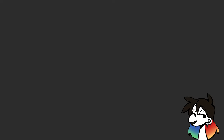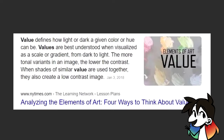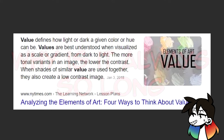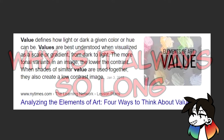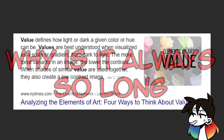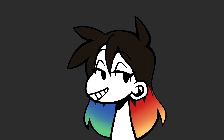According to Google, value defines how light or dark a given color or hue can be. Values are best understood when visualized as a scale or gradient from dark to light. The more tonal variance in an image, the lower the contrast. When shades of similar value are used together, they also create a low contrast image.